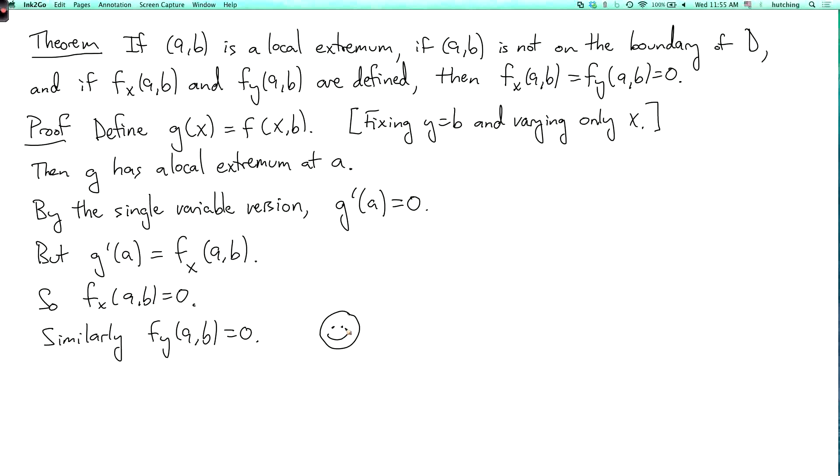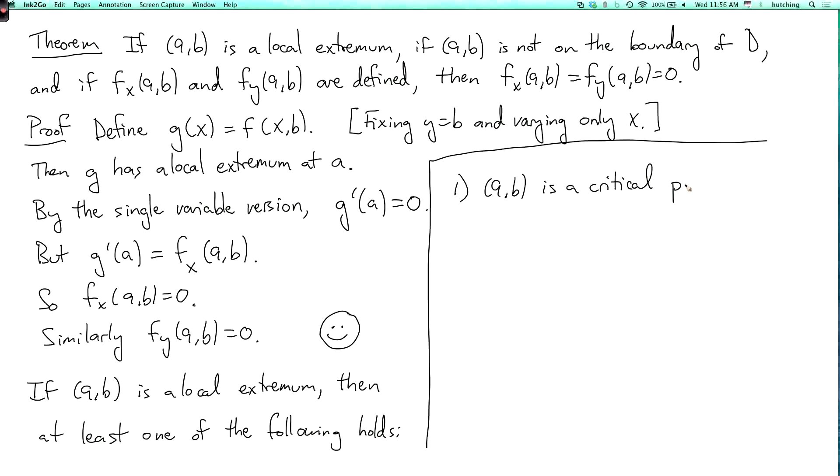So a logically equivalent way to state this is that if (a,b) is a local extremum, then at least one of the following holds. And let's put them over here. So the first possibility is that (a,b) is a critical point of f. The second possibility is that fx(a,b) and fy(a,b) are not both defined. And the third possibility is that (a,b) is on the boundary of the domain.